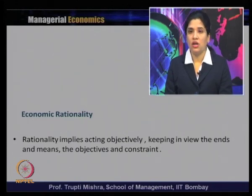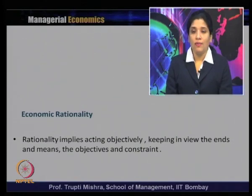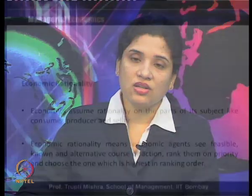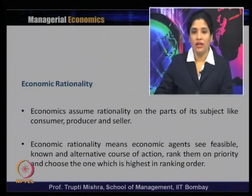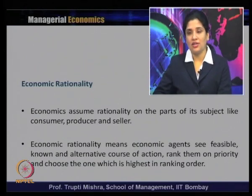The second assumption is economic rationality, which implies acting objectively keeping in view the ends, means, objective, and constraints. In layman's terms, rationality means being unbiased and keeping the objective in mind when making decisions. In economics, we assume rationality on the part of all economic agents — consumers, producers, sellers, firms, or the economy as a whole. Economic rationality means agents see all feasible and known alternative courses of action, rank them by priority, and choose the one highest in the ranking order.